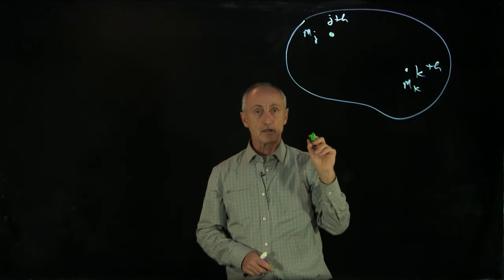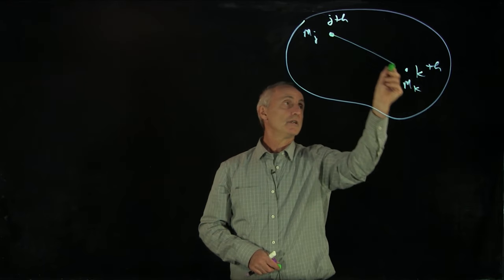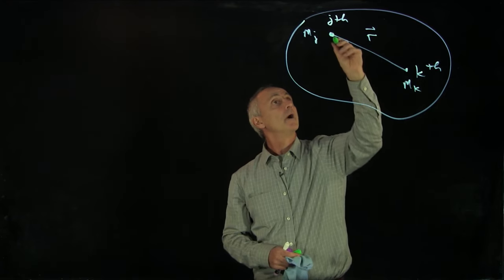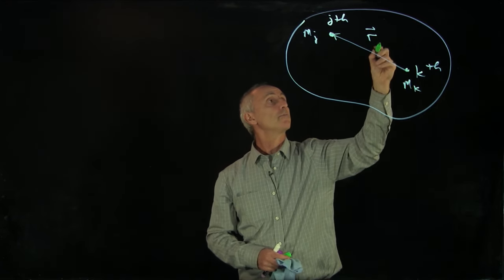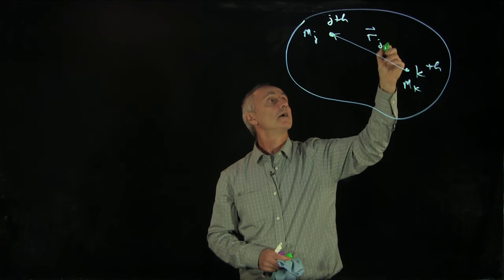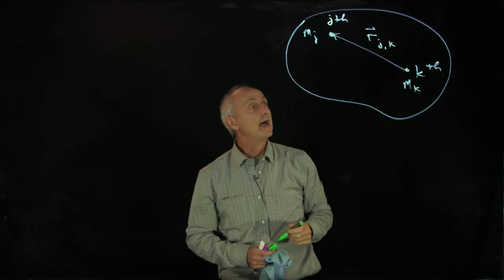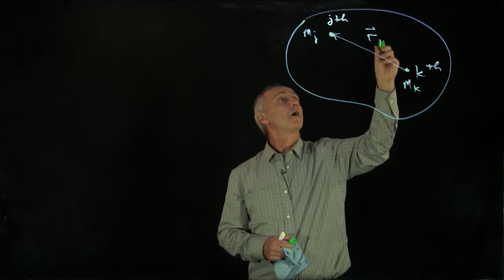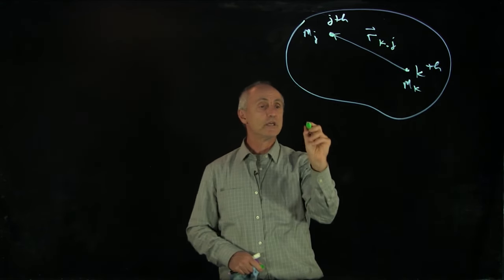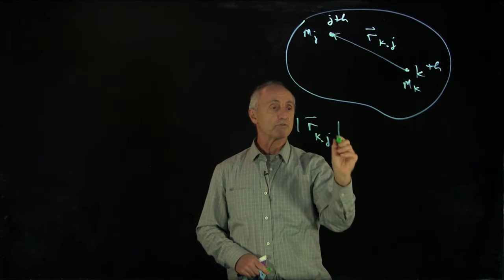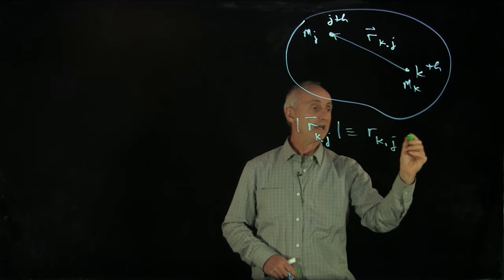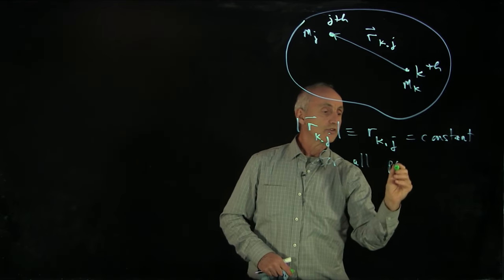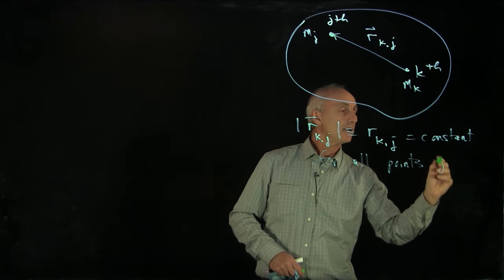And the important thing that defines a rigid body is the condition that the distance, and we'll draw this, a vector from the k-th particle to the j-th particle. So we'll draw that as rjk. And actually, I would like to write it from the k-th particle to the j-th particle, rkj. And our condition is that the magnitude of this vector, which I'll denote as rkj, is constant for all points j and k.